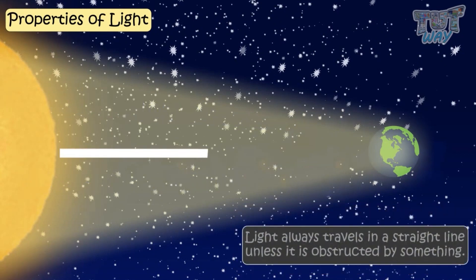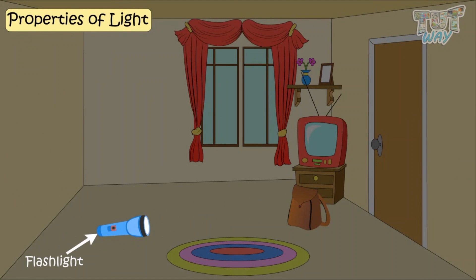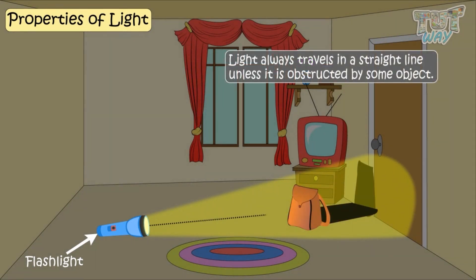Light always travels in straight lines unless it is obstructed by something. Take a normal torch and switch it on. What do you see? Light always travels straight unless it's obstructed by some object.